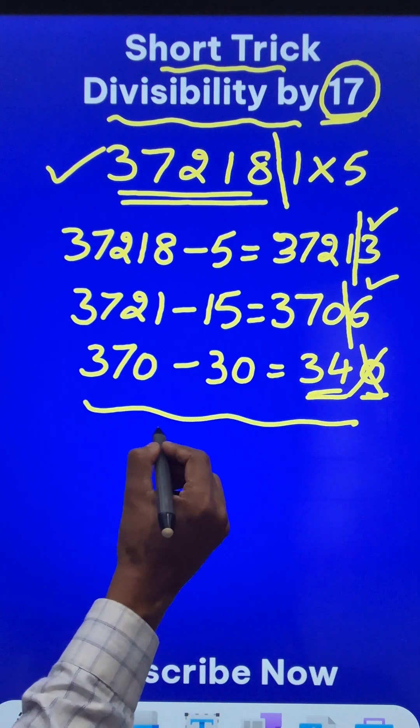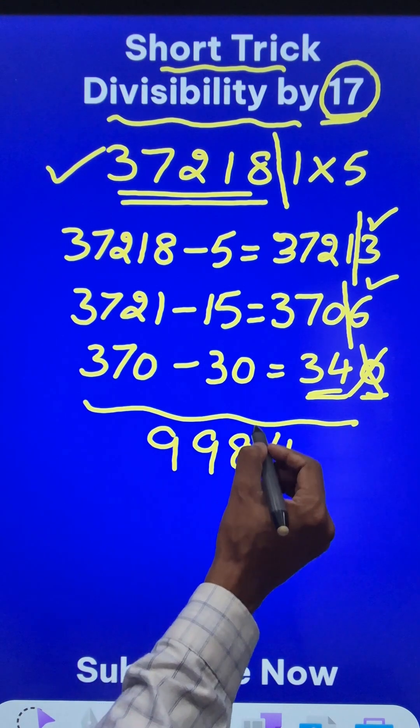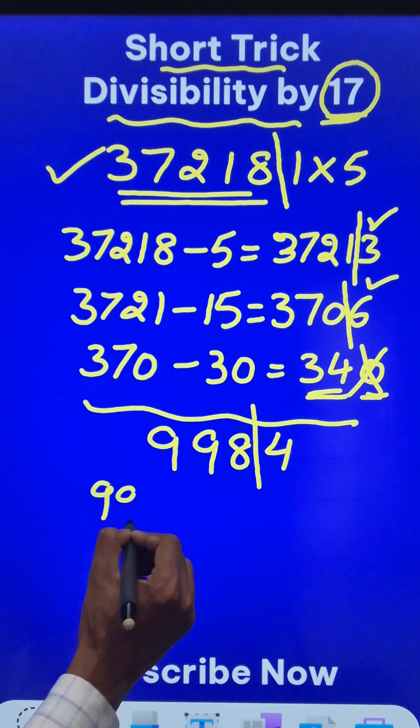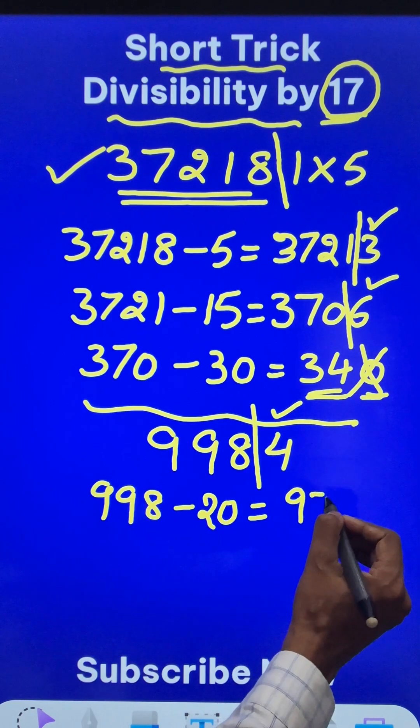Likewise, let's take one more example of a 4 digit number, 9984. Now if you separate the last digit, 998 minus 5 times 4 is 20, so you get 978.